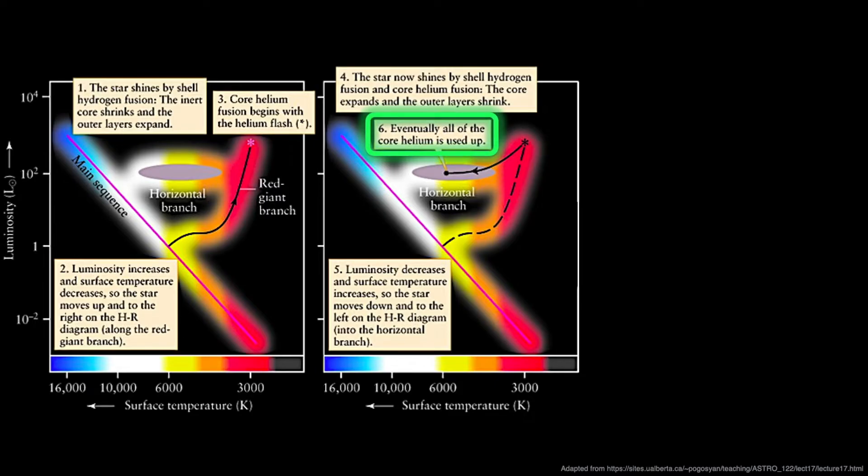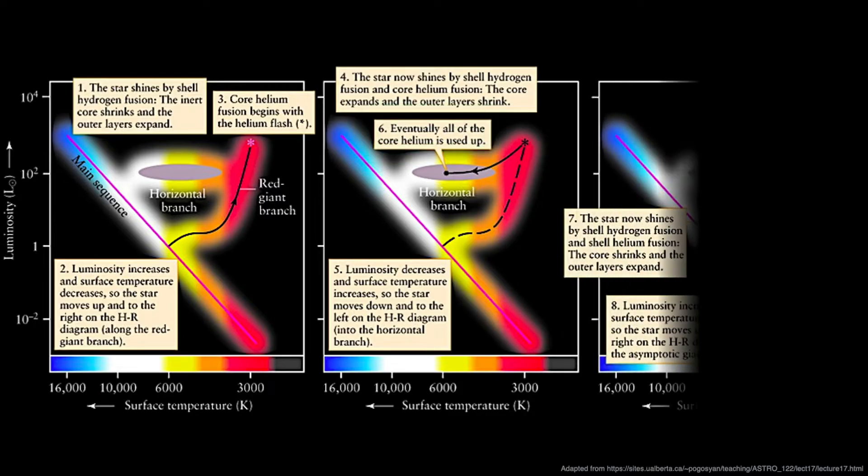Eventually, all of the core helium is used up and now the star shines by shell hydrogen fusion and shell helium fusion. The carbon core shrinks while the outer layers begin expanding again. And this expansion results in the increase in the star's luminosity and a decrease in surface temperature, so it moves up and to the right yet again on the HR diagram, now moving into what's called the asymptotic giant branch, where stars becoming supergiants tend to go.